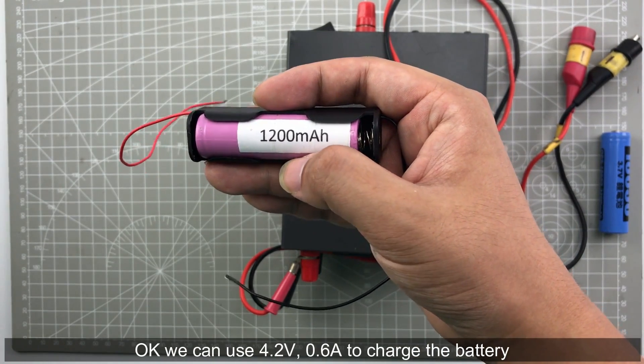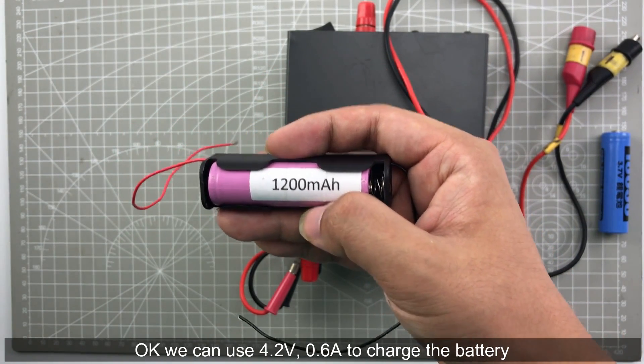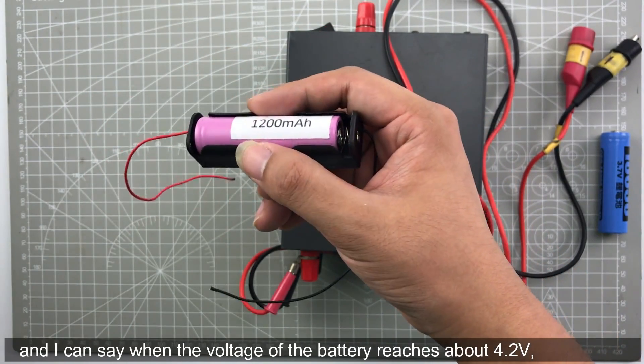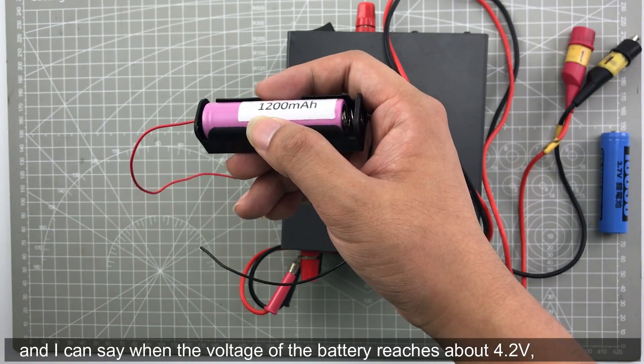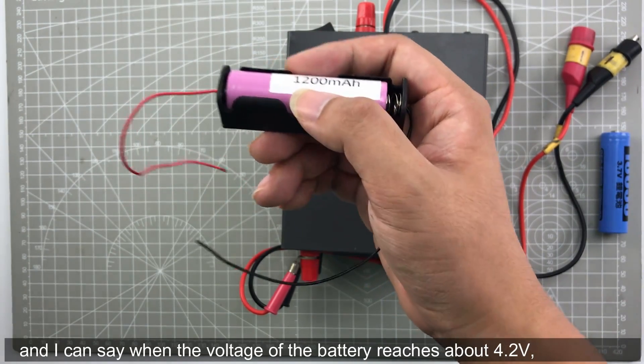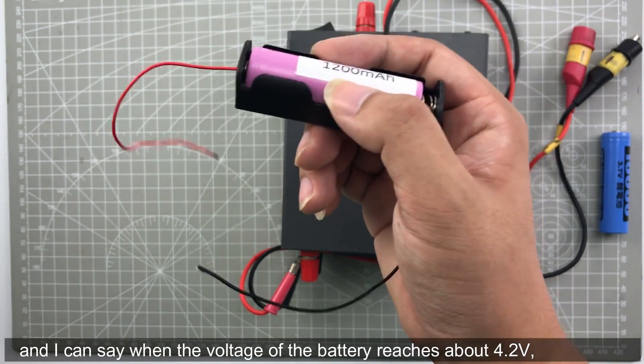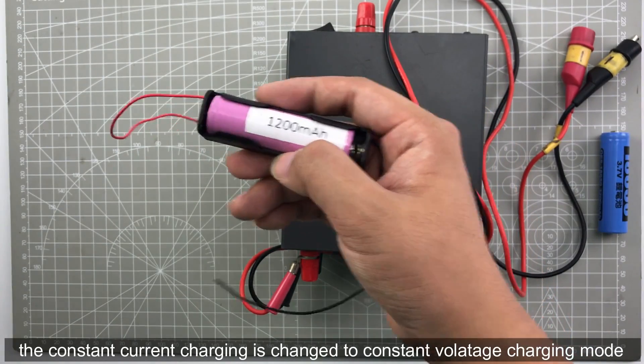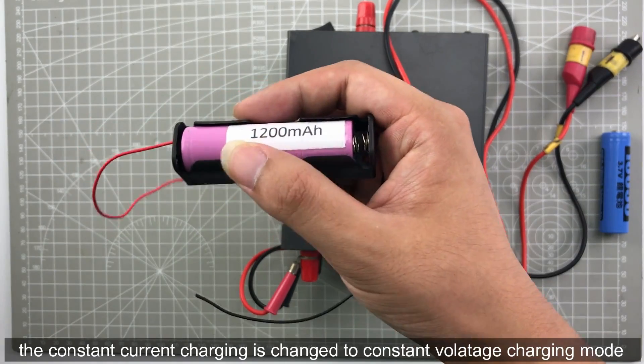0.6 ampere to charge this battery. When the voltage of the battery reaches about 4.2 volt, the constant current charging is changed to constant voltage charging mode.